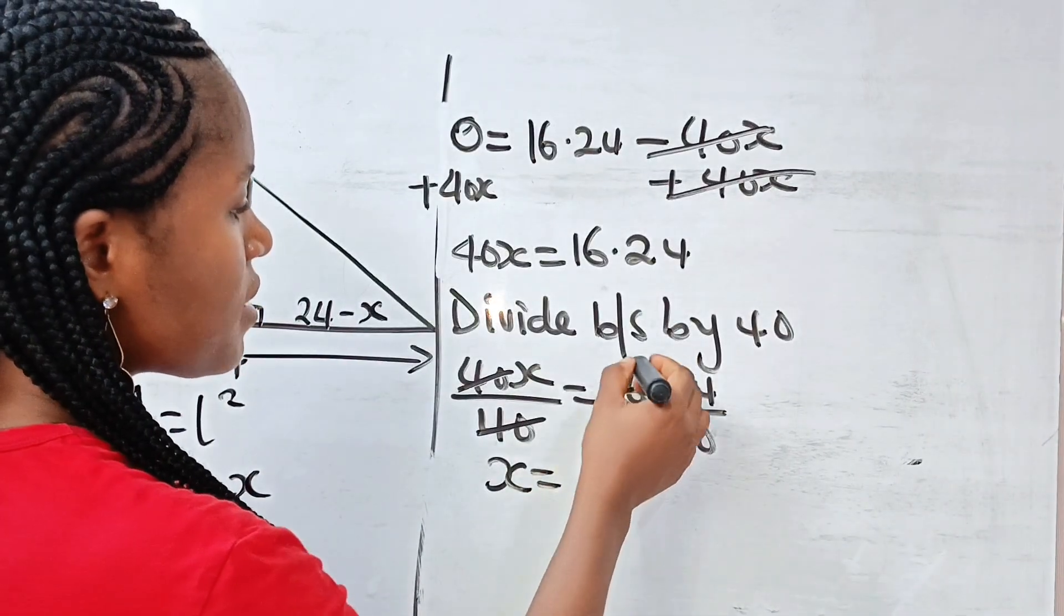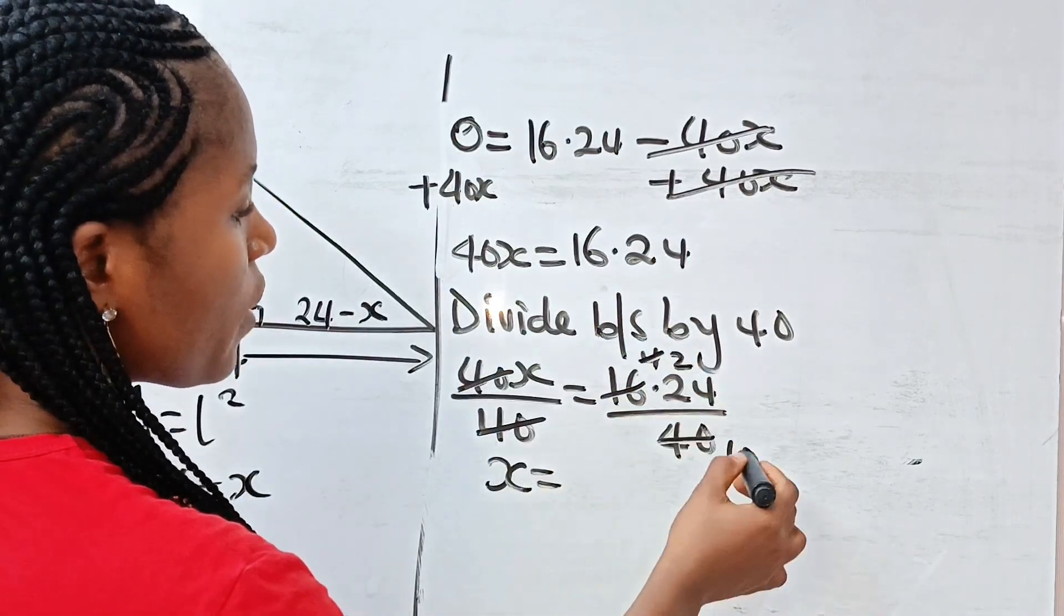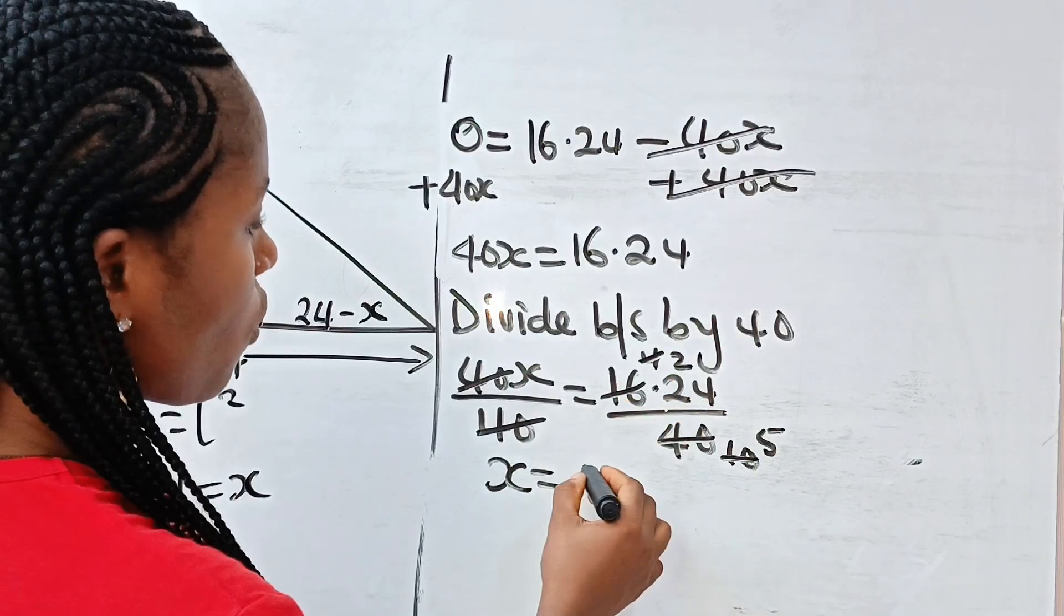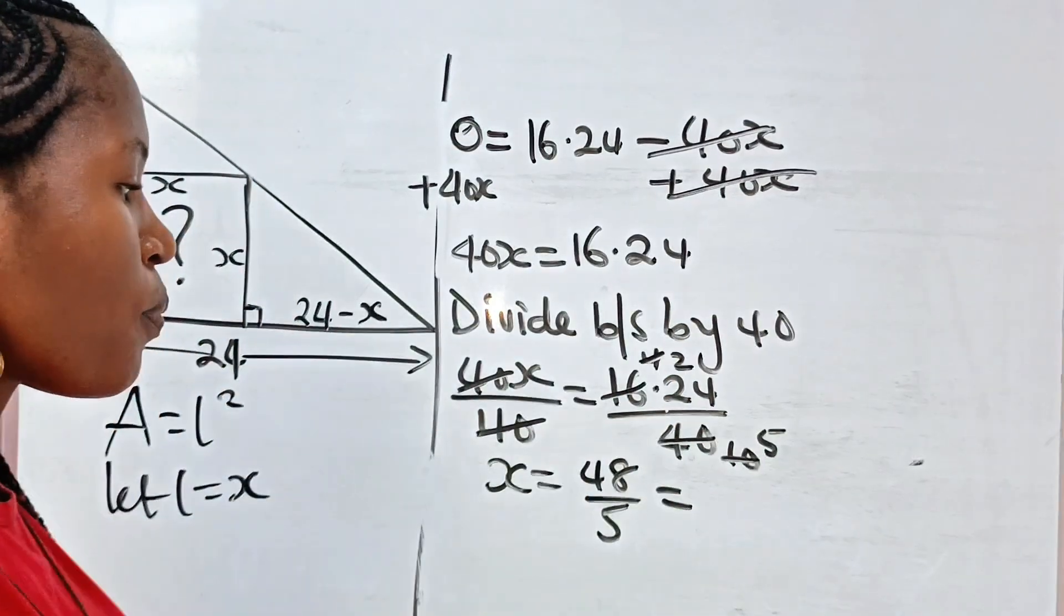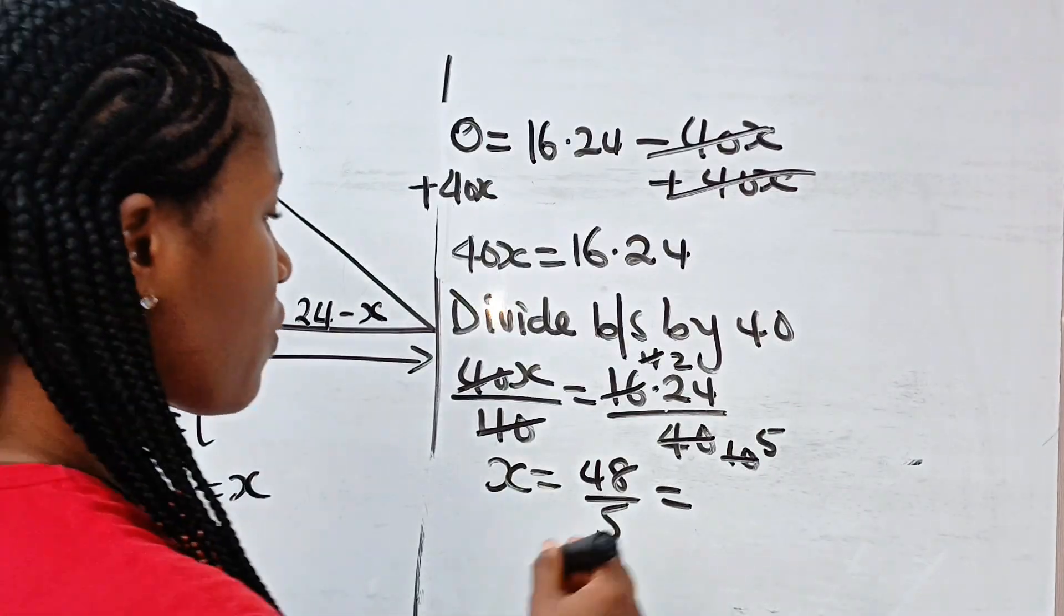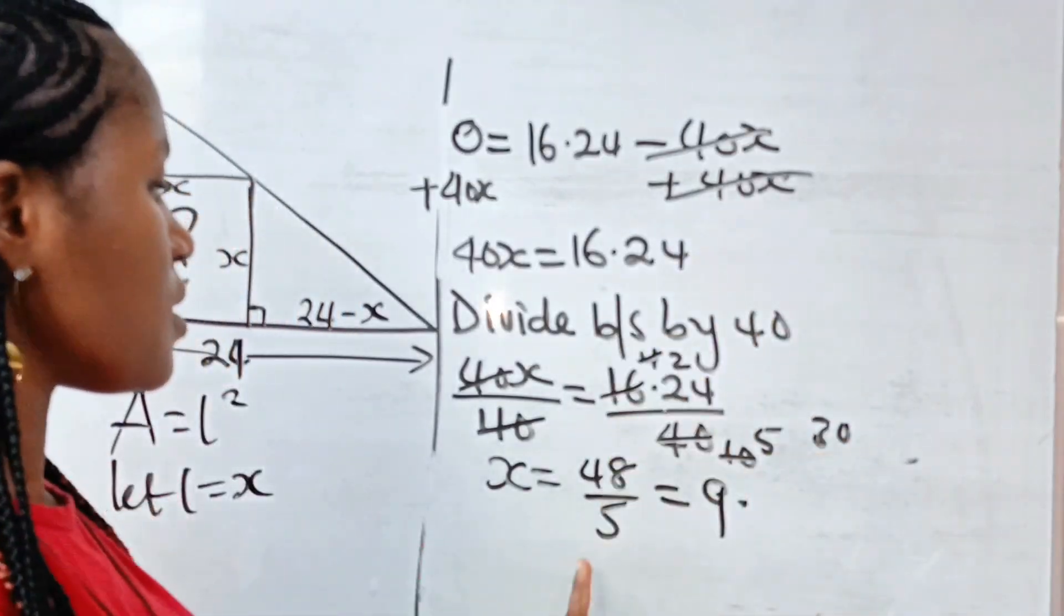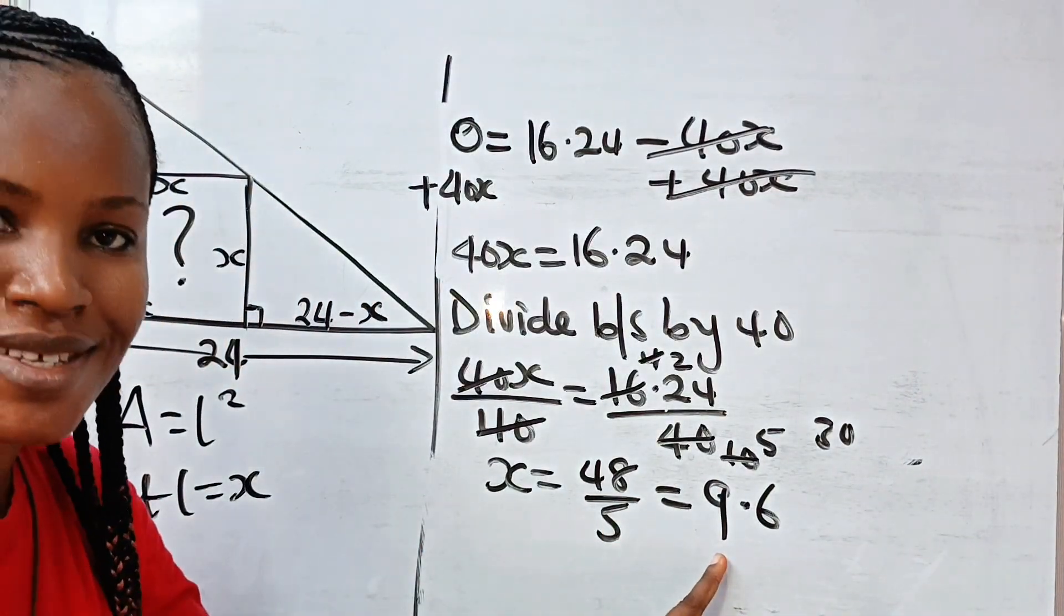Now, 40X divided by 40 we have X is equal to... Let's divide by 4. When 4 divides 16, we have 4. Divide 40, we have 10. When 2 divides 4, we have 2. Divide this, we have 5. So what we have is 2 times 24 which is 48 divided by 5, which is equal to... 48 divided by 5 gives us 9 remainder 3. The 3 adds 0, 30 divided by 5, we have 6. So it means that our X is 9.6.